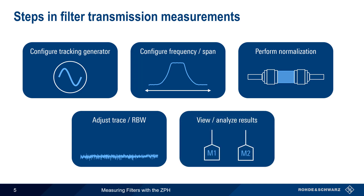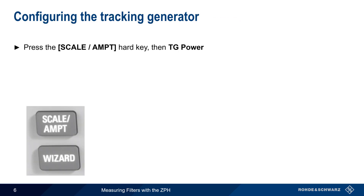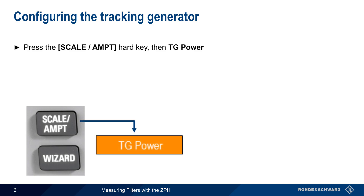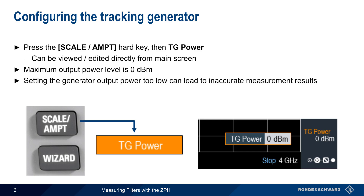Let's start by discussing tracking generator configuration. The ZPH's tracking generator is configured by pressing the Scale Amplitude hard key and then selecting TG Power from the menu. Note that the tracking generator power can also be viewed and edited directly from the main ZPH screen. The maximum configurable output power is 0 dBm. Care should be taken not to set the tracking generator output power level too low, since this can lead to inaccurate measurement results.